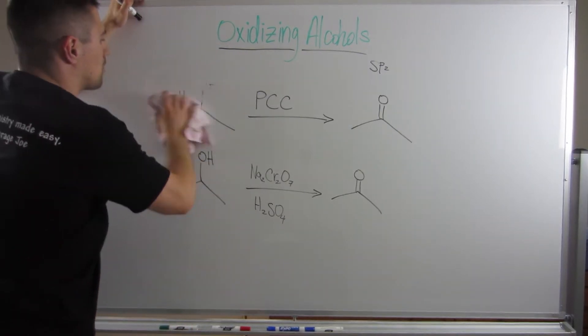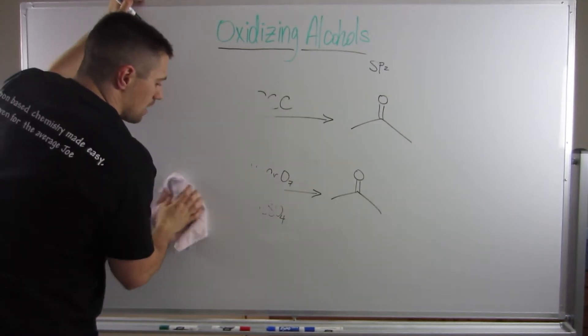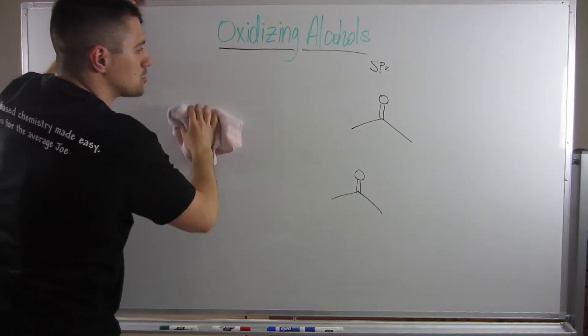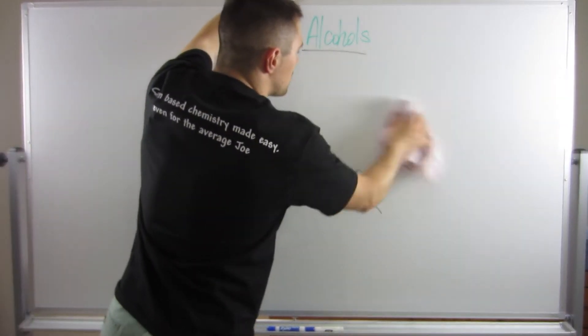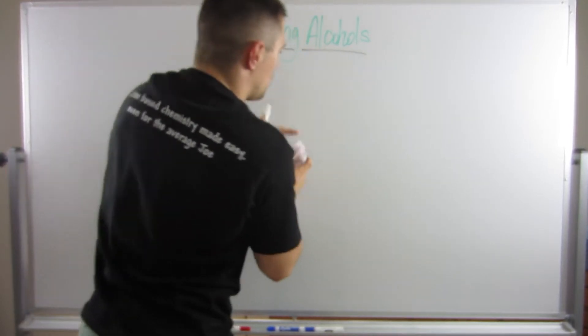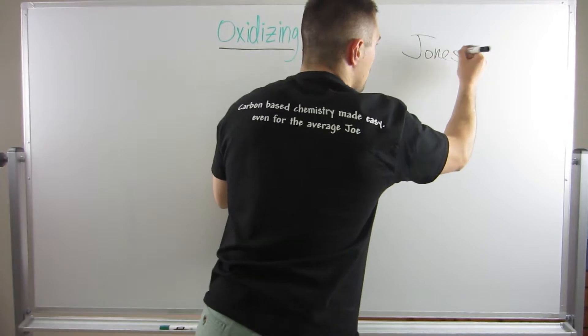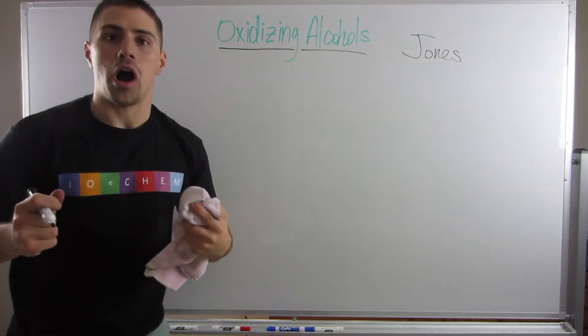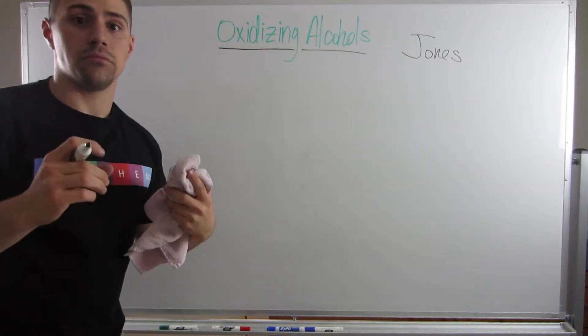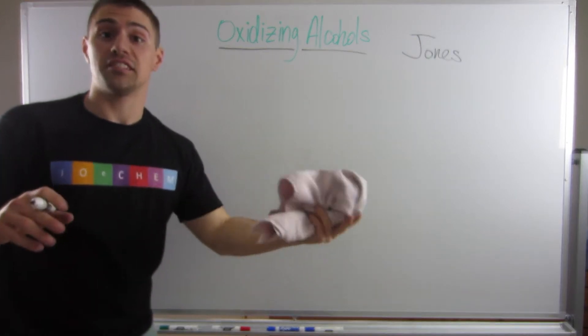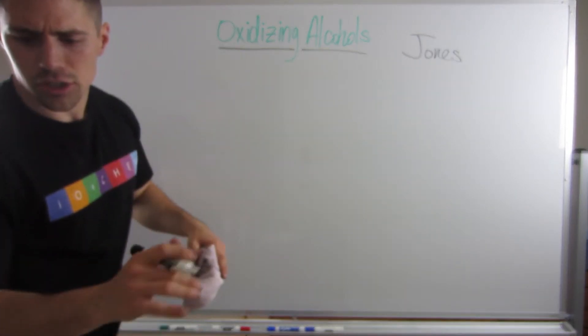However, in this situation, right, they're equivalent. However, they can behave differently depending on the molecule you have. And let me show you an example. So I'm going to erase this because, don't worry, we're going to be writing these reagents a bunch of times. If you almost want to think about it, the sodium dichromate and H2SO4, which is commonly referred to as the Jones reagents, is the more aggressive oxidizing agent. It will oxidize things more aggressively.